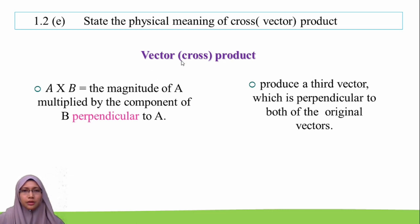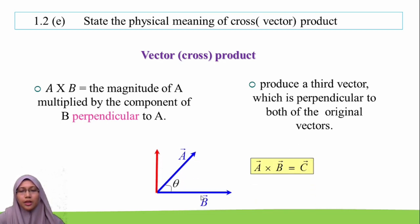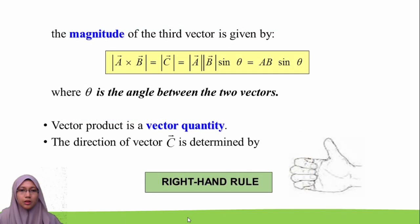Meanwhile, we have the vector product, also known as cross product. It is written as A cross B and it is equal to the magnitude of A multiplied by the component of B perpendicular to A. The vector product produces a third vector which is perpendicular to both of the original vectors. The magnitude of this third vector is given by A cross B equals AB sin theta.